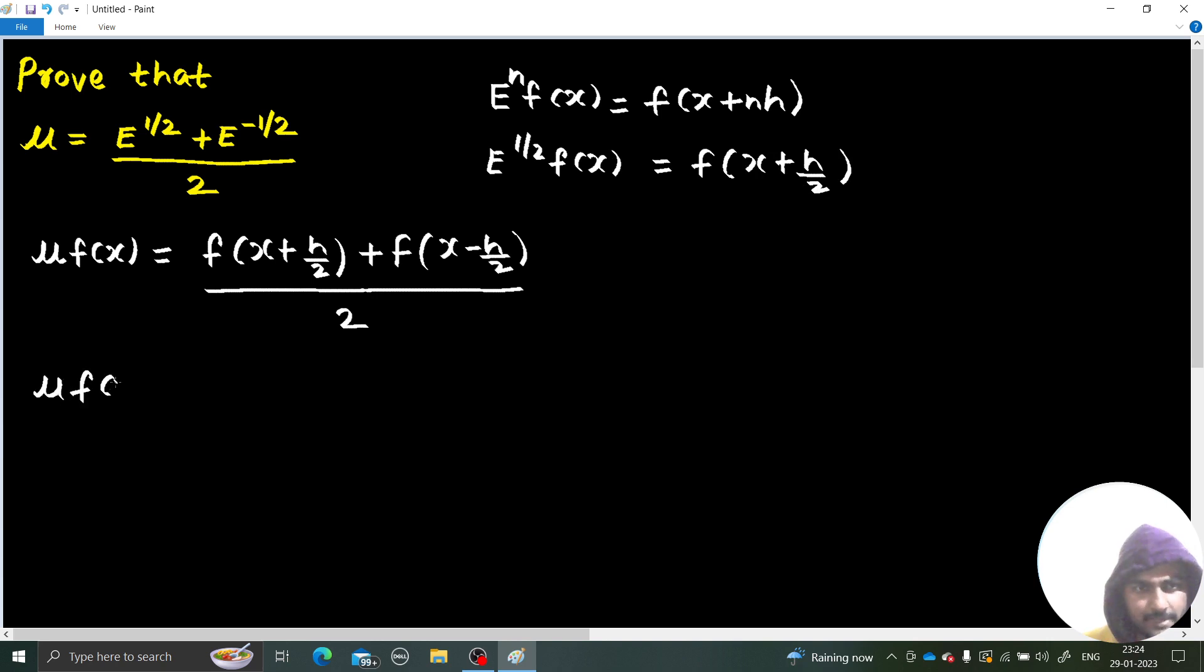So mu operating on fx - this is not mu times fx, this is operator mu operating on fx - is equal to E power half fx. This can be written as E power minus half fx. And because half is a constant, we can write it outside of the operator also.